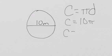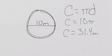But a lot of times we multiply that out and we go 10 times 3.14, that's 31.4 meters around in this case. So it's 31.4 meters around the circle.